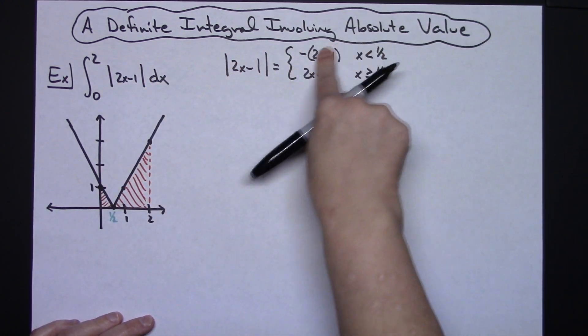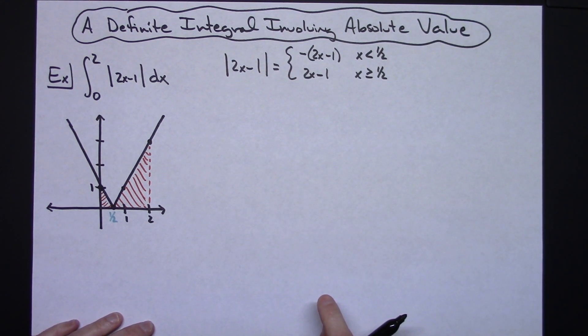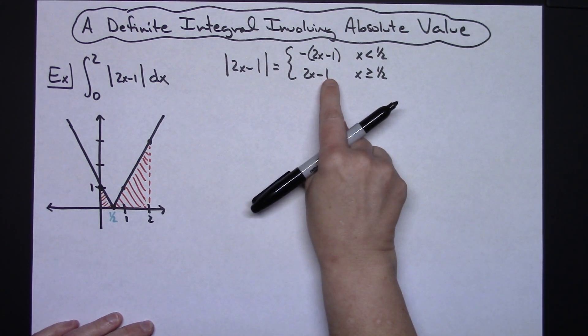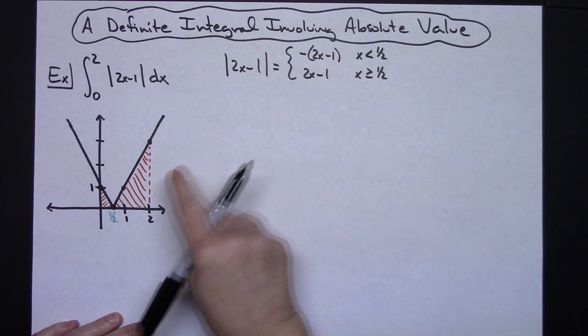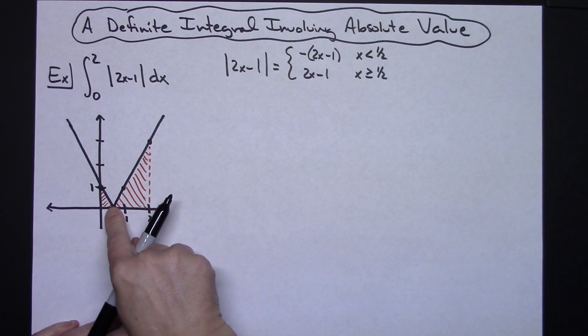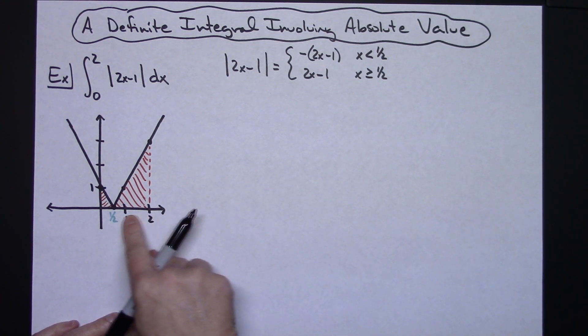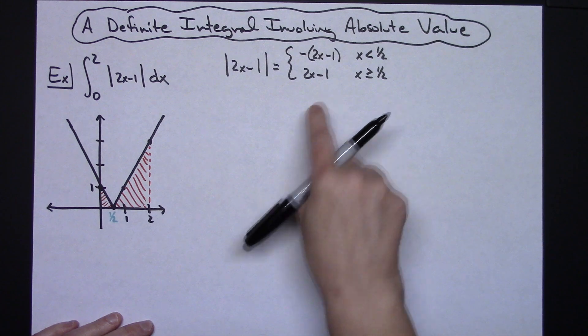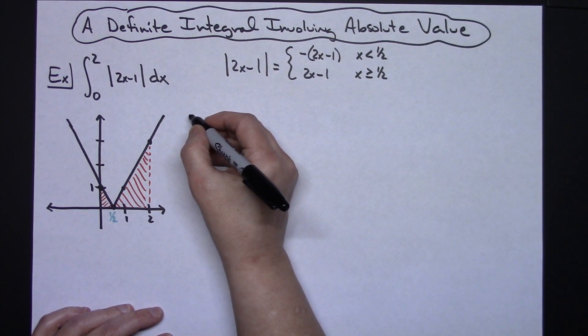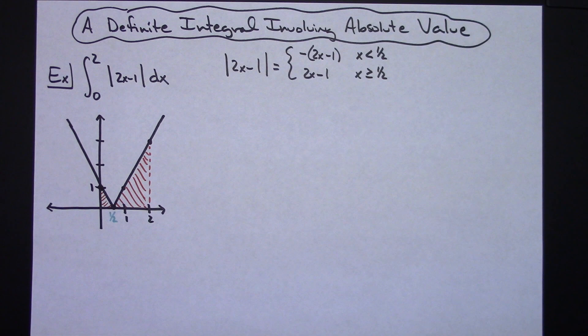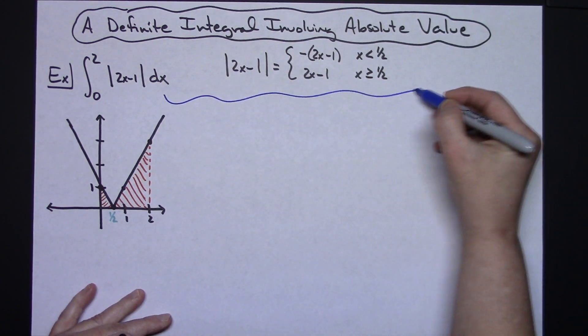So by looking at my picture and knowing the definition of absolute value I can rewrite this integral so that I have two individual sections. This is going to allow me to integrate from 0 to 1 half with the top function and then integrate the second half from 1 half to 2 and then add them together. So let's draw a little line here so we know we're starting our integration.